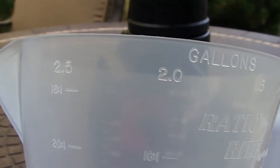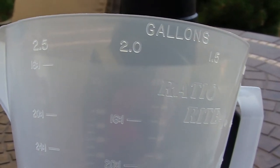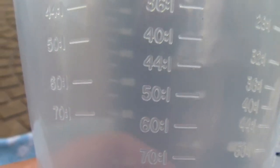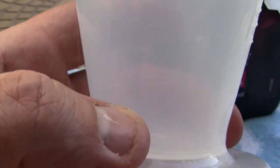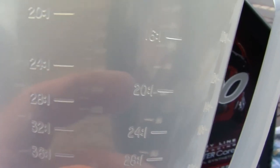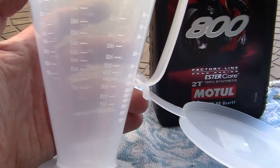So what we do is, we know we're going to mix 2 gallons of gas. So we look down the RatioRite, let's say we're going to go 50 to 1, right there. We mix the amount of oil from the very bottom here all the way up to 50 to 1, which is right here, 50 to 1 right here. And then we know we have that much ratio per 2 gallons.